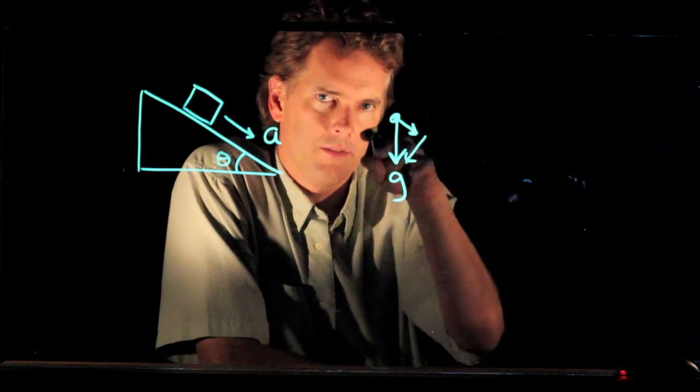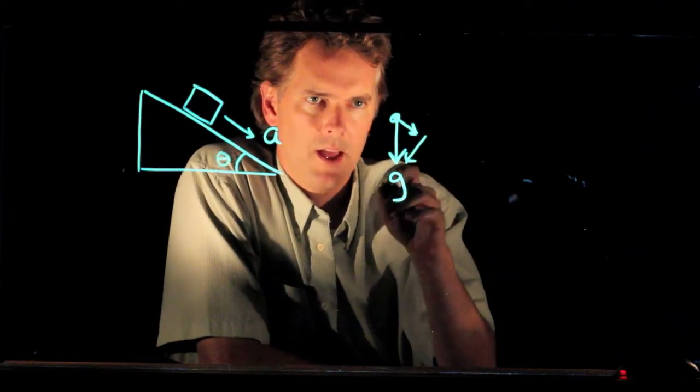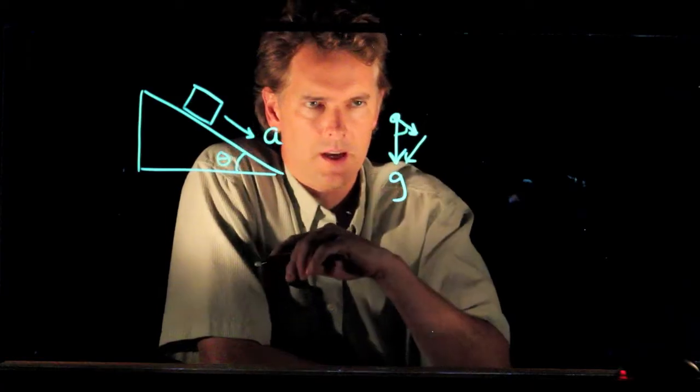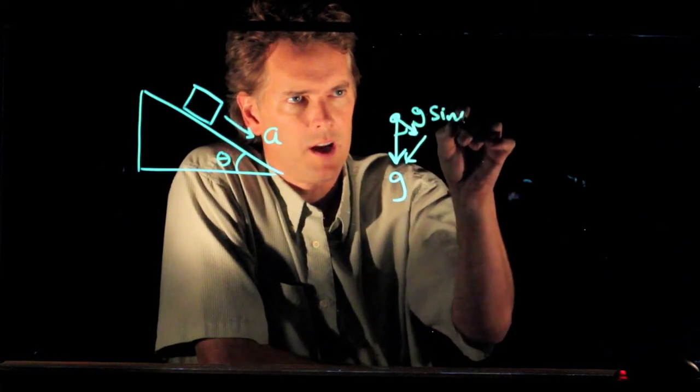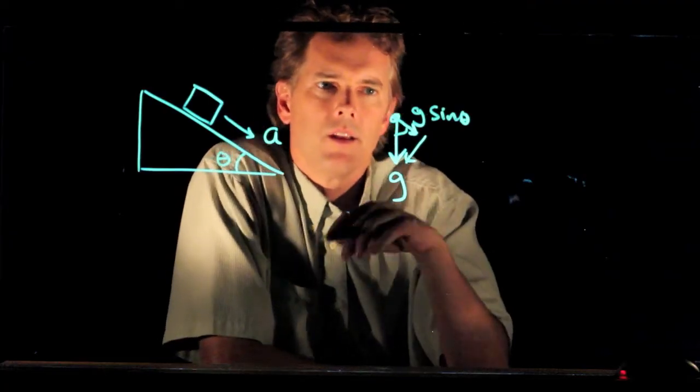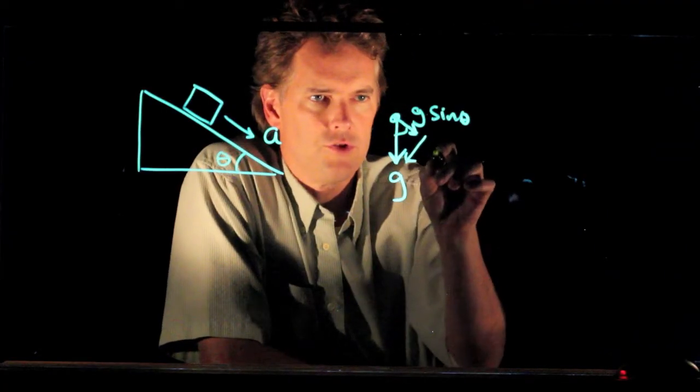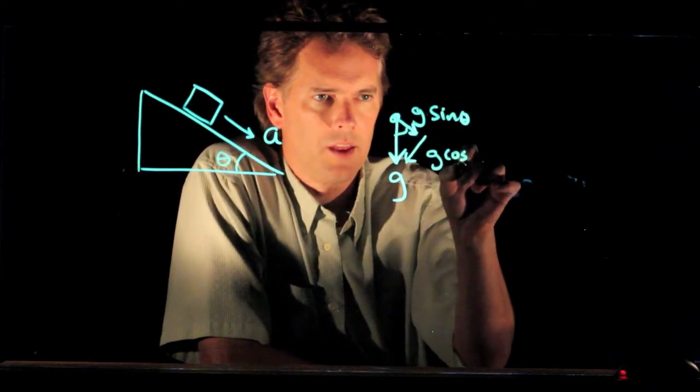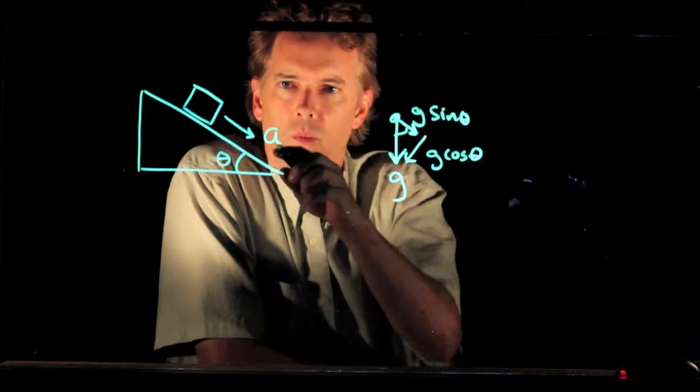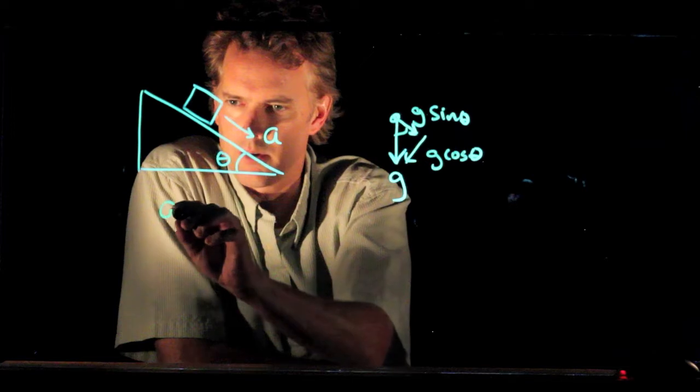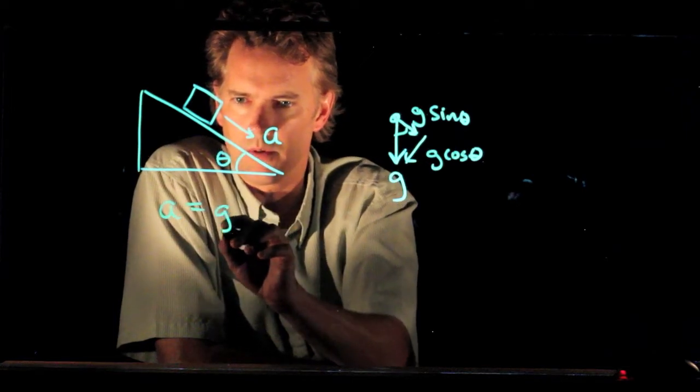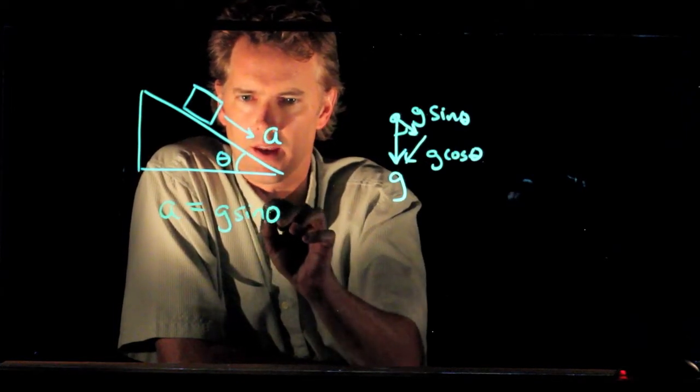Now, if this is a right triangle, and this is my angle theta, then this side of the triangle is g sine theta. The other side is, of course, g cosine theta. So what is the acceleration down the incline? The acceleration down the incline is equal to g sine theta.